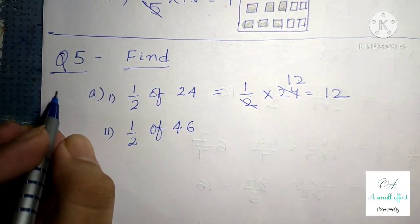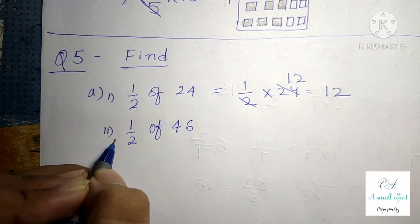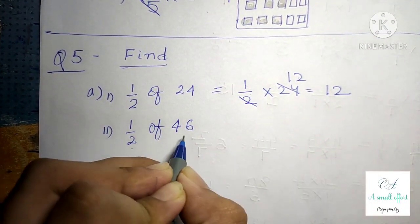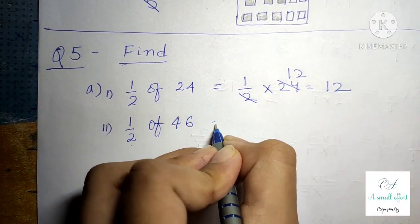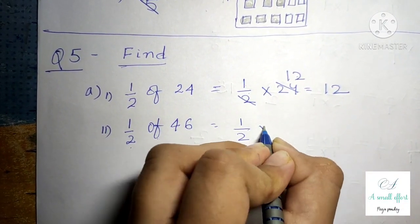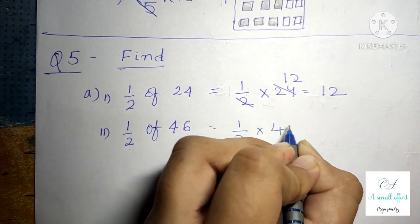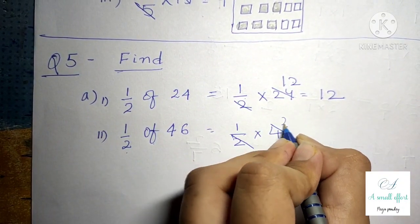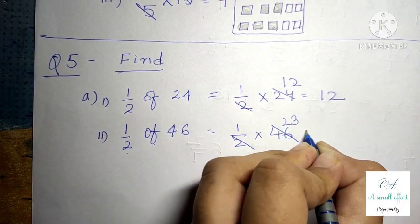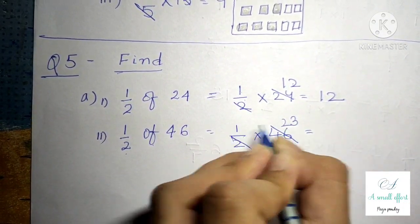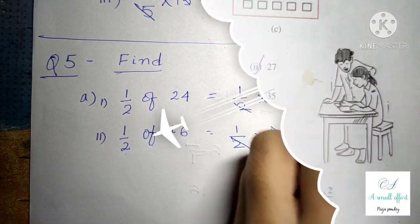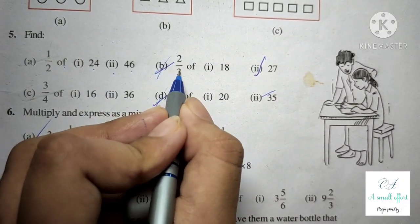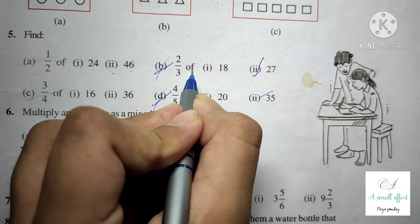Question number 5 bit A, second part is 1 by 2 of 46. We can write this as 1 by 2 into 46. In the 2 times table, 46 comes 23 times, so the answer is 23. Question number 5 bit B is 2 by 3 of 18.